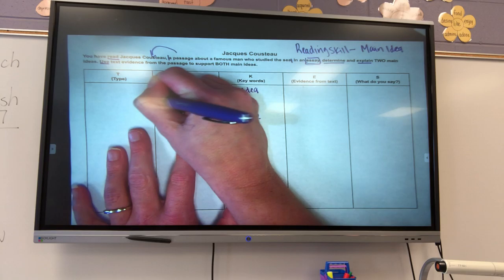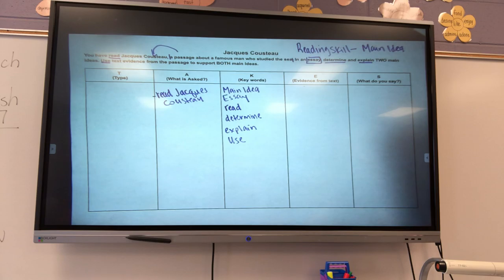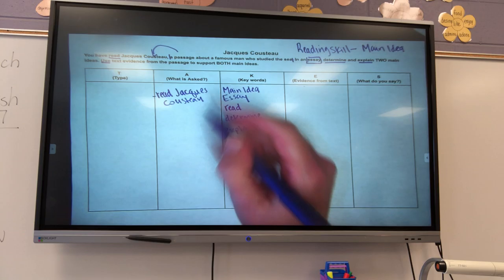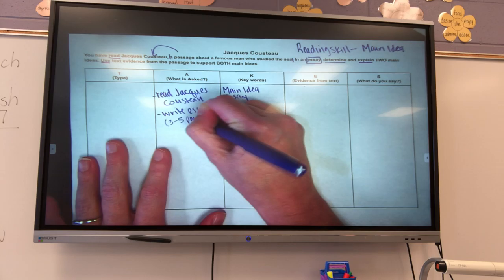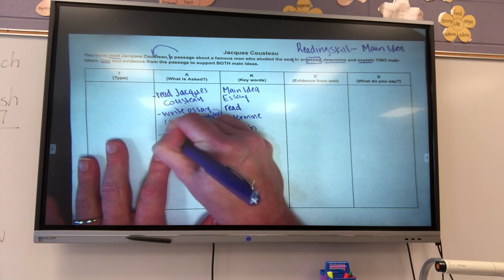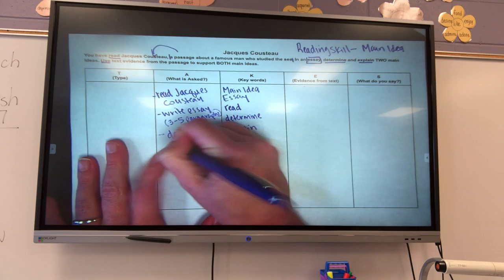So, main idea is my reading skill. Essay is what they're wanting me to write. What do they want me to read? Jacques Cousteau. Alright. So, what is asked? Read Jacques Cousteau. Then, it wants me to write an essay, which means I'm going to do three to five paragraphs.